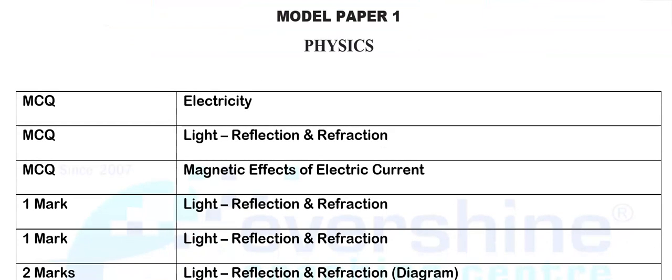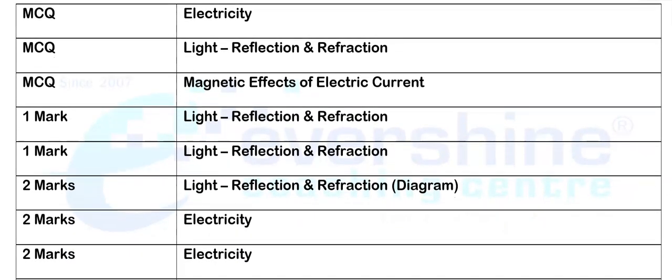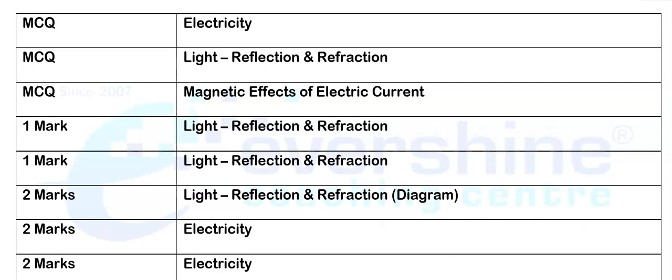As you can see here, this is model paper number 1 analysis. Physics, model paper number 1. The first MCQ question is asked from the chapter electricity, and the next MCQ is from the chapter light. The third MCQ is from the chapter magnetic effect of electric current. So these three MCQs have been asked from three different chapters.